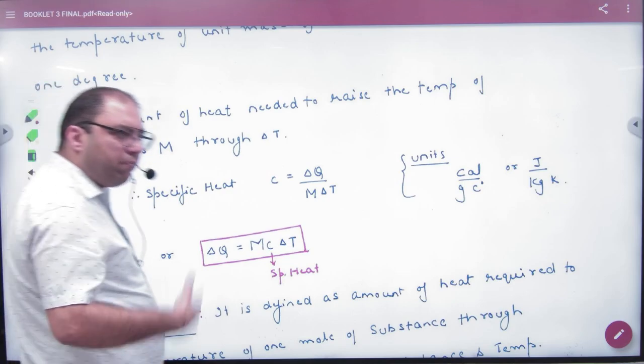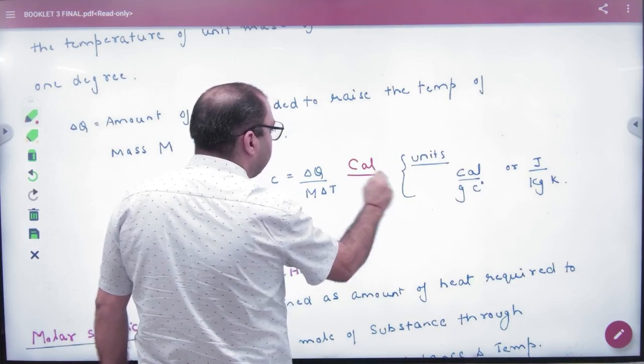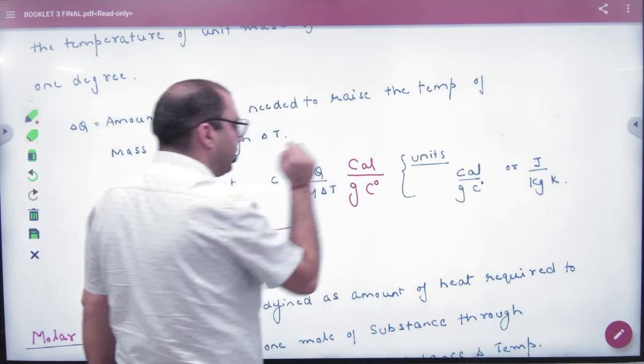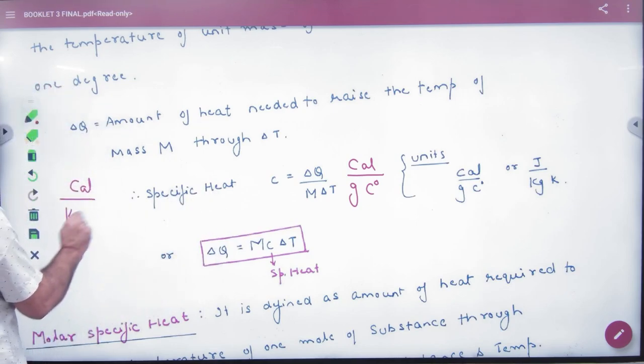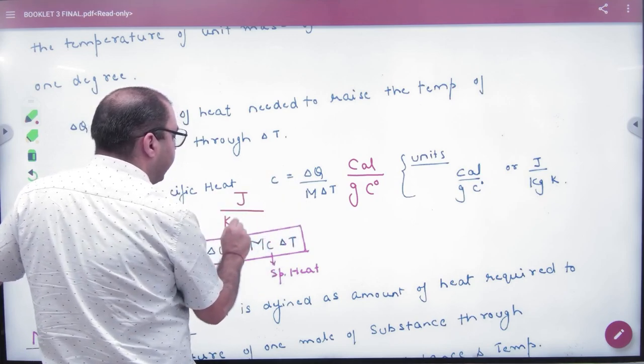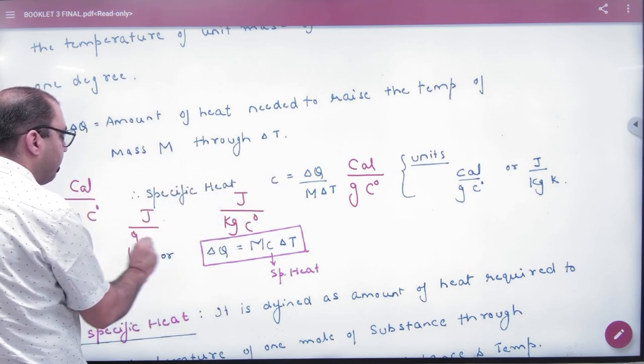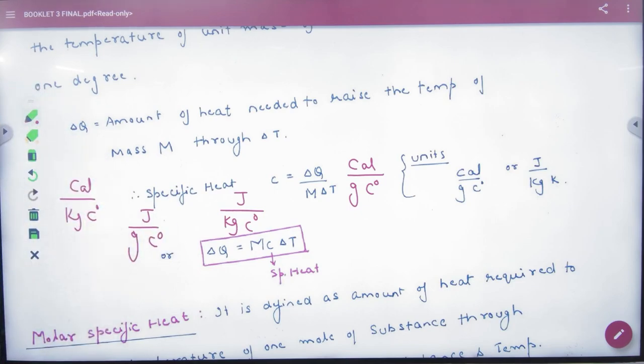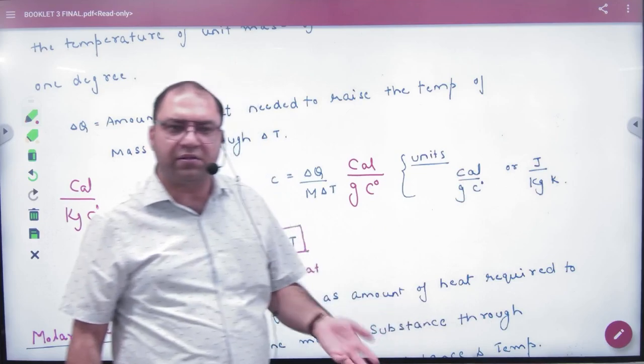Units: there are multiple units. Heat with calories, mass with kg per degree celsius. Or heat with joules, mass with kg per degree celsius. Or heat with joules, mass with grams per degree celsius. The concept of units can be calories per gram per degree celsius, joules per kg per celsius, no matter what the difference is.